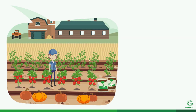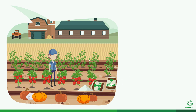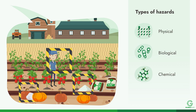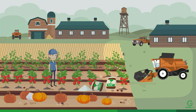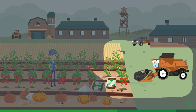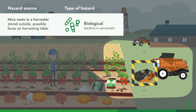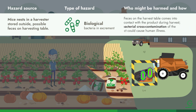A hazard is a specific thing, event, or occurrence that will cause harm and can usually be categorized as physical, biological, or chemical. For example, if mice have been found making nests in the harvester while it is stored outside and not in use, the specific hazard would be biological contamination, and the source would be bacteria found in the excrement of the mice. This hazard and its source should be added to your initial list.